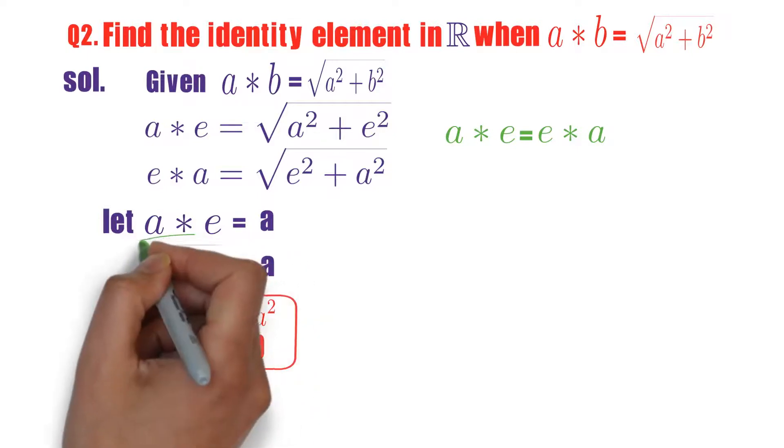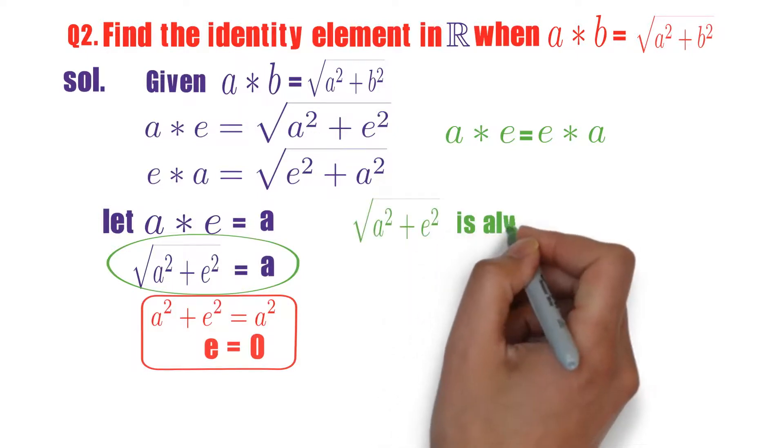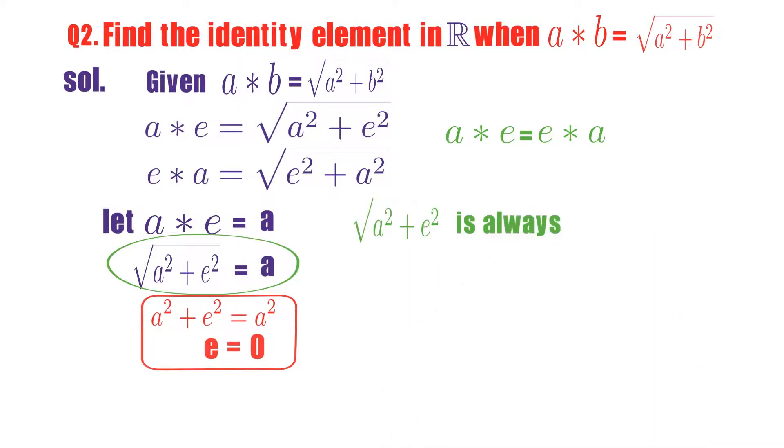Where are the chances that we'll get mistaken? You observe this. In this LHS part, you observe root over a square plus e square. Square root of any expression is always positive. Square root of a square plus e square is always greater than or equals to 0.